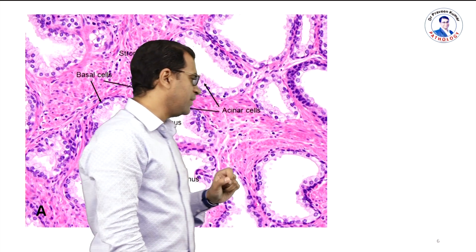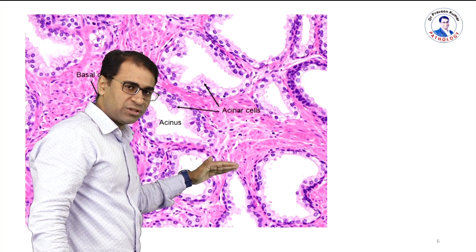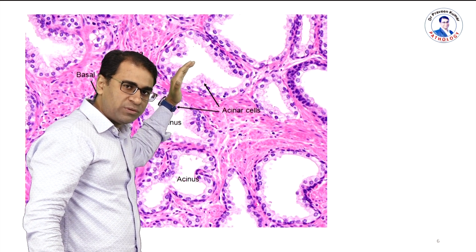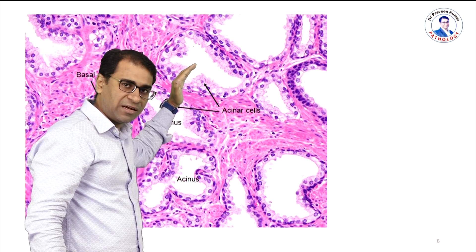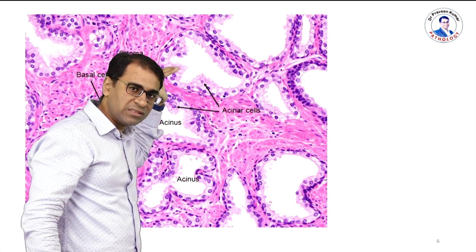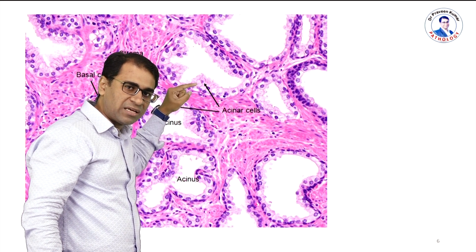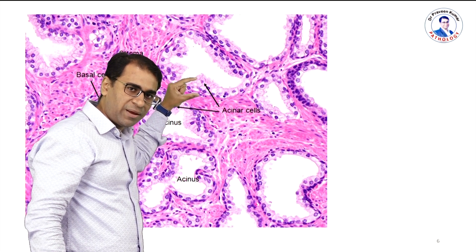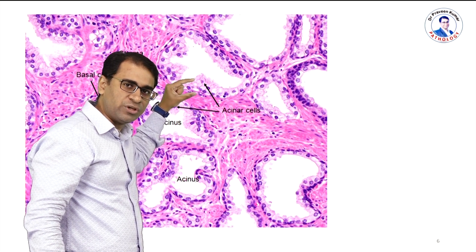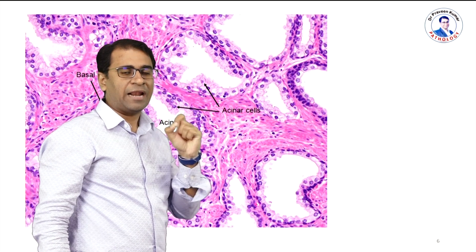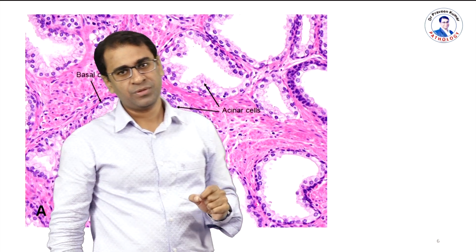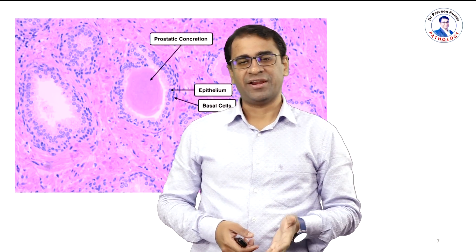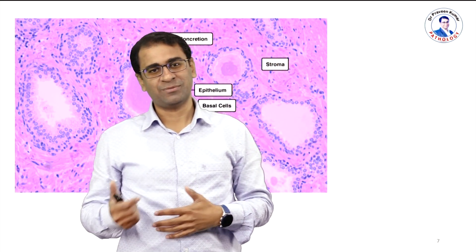Again, I repeat — this whole pink area you see, these all are stromal areas, and this whole thing is a gland or acinus. This gland has a basal layer — the dark one is the basal layer. And the upper area is actually the glandular epithelium. So when you see these two layers, something is right; else something is wrong.